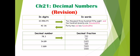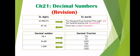Let's look at the next exercise. We have to write the first decimal number as a decimal fraction. For seventy eight point three, we write the number without the point in the numerator, and in the denominator we write 10 because we have one digit after the point. For the second number, fifty four point eighty nine, we write the number without the point in the numerator and in the denominator we write one hundred — two zeros — because we have two digits after the point.